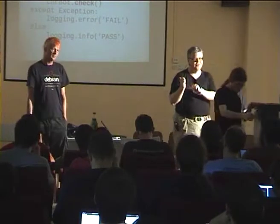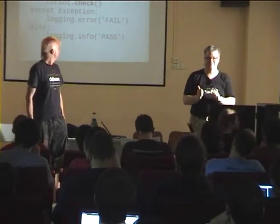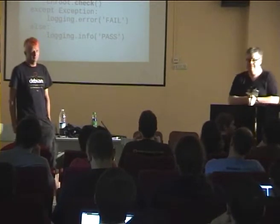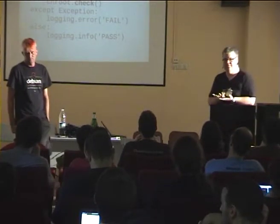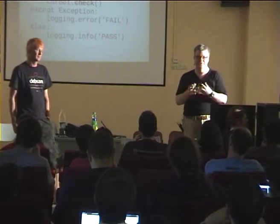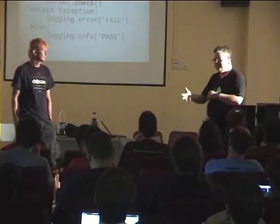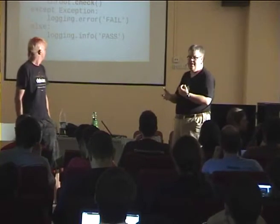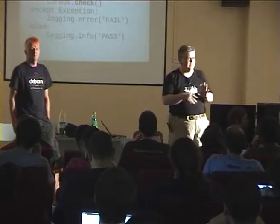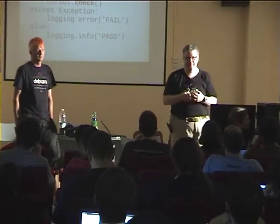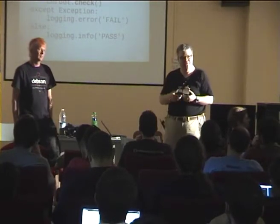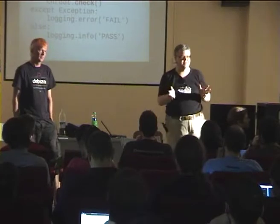This is what it does — that's not actual code; it sort of looks like Python but it's pseudocode. It first creates a chroot, a virtual environment, in which it pretends to install Debian. Then it installs the package into the chroot, removes it, and verifies that everything went okay. If there's a problem it reports a failure, and if there's no problem it reports a pass.